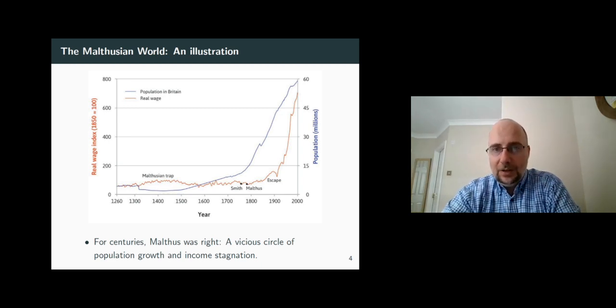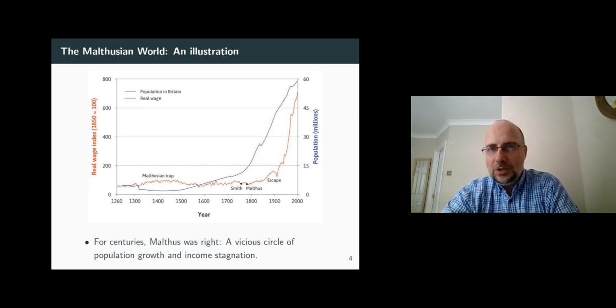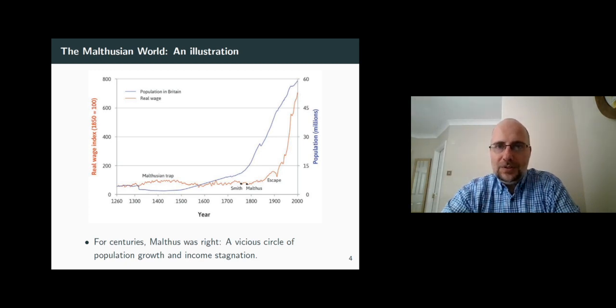The great tragedy of Malthus, however, was that, just like Irving Fischer, he lived on the cusp of a dramatic change in the way we live, a change which he could not foresee coming. This change was the Industrial Revolution. In the next video, we will examine how the Industrial Revolution broke the vicious circle of population growth and income stagnation, so keep watching.